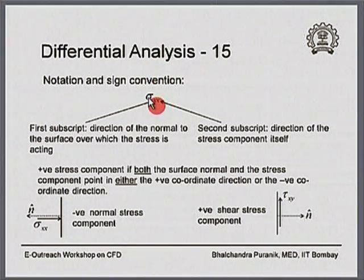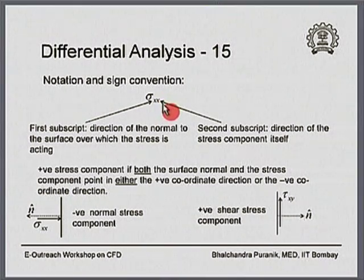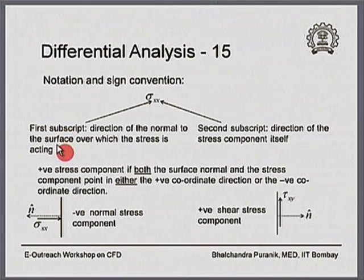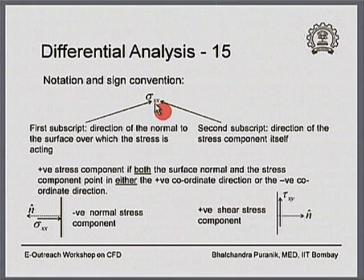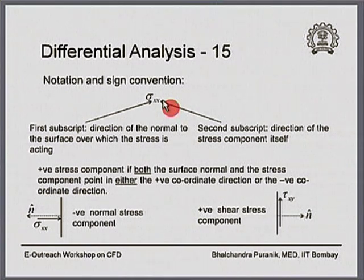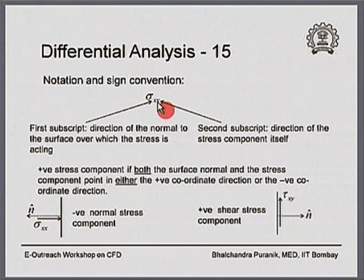A stress component will be either sigma if it is normal or tau if it is shear, and it will have two subscripts. The first subscript denotes the direction of the normal to the surface over which this stress is acting. So if the first subscript is x, the normal to that surface is in the x-direction. The second subscript denotes the direction of the stress component itself.